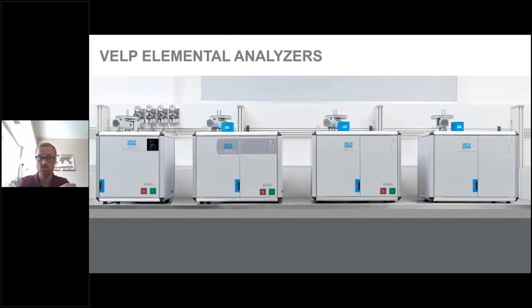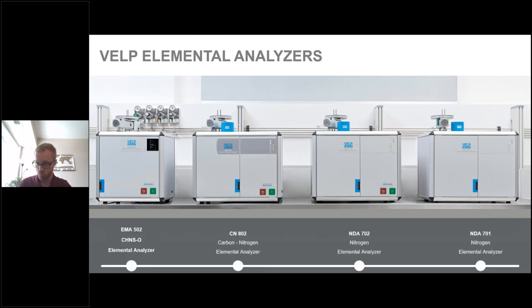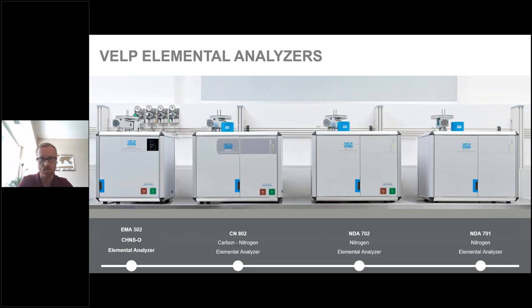Regarding the history of VELP elemental analyzers: we first introduced the NDA 701 for nitrogen-based protein determination using helium, then the NDA 702, a dual-carrier analyzer offering helium or argon. We then released a carbon nitrogen analyzer — also a Duma dual-carrier elemental analyzer — and most recently the EMA 502, which allows for C, H, N, S, and O elemental analysis.